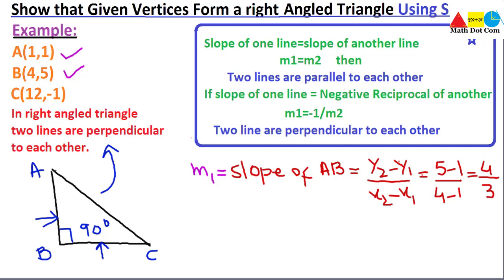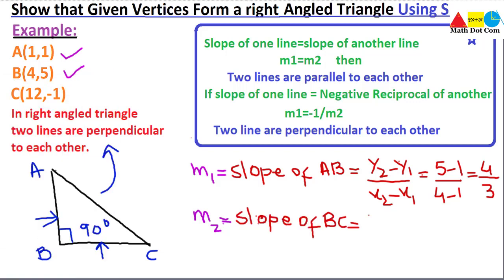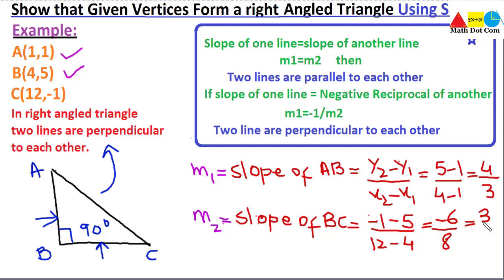Next, m2 is the slope of line BC, using points B and C. Again, y2 minus y1 over x2 minus x1 gives us minus 1 minus 5 divided by 12 minus 4, which is minus 6 divided by 8. Simplifying, we get minus 3/4. So the slope of BC is minus 3/4.